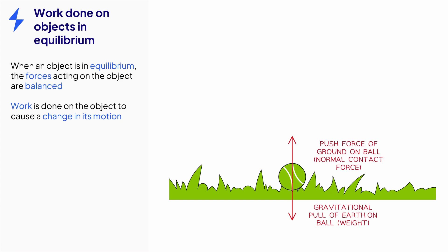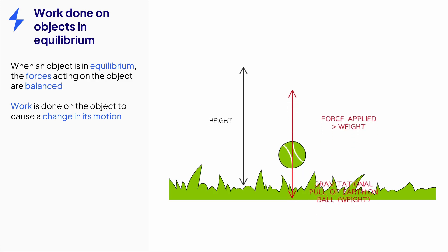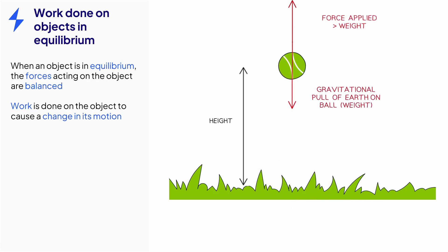To lift the ball through a height, a force is required that is larger than the weight. Energy is transferred mechanically to the gravitational potential store of the ball and work is done on the ball to lift it through the gravitational field. When that force is removed, the only force acting on the ball is weight, and so the ball falls back towards the center of the earth and energy is transferred away from its gravitational potential store.